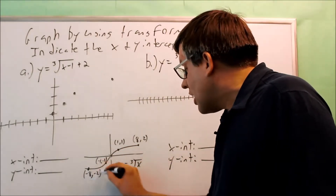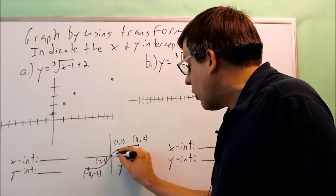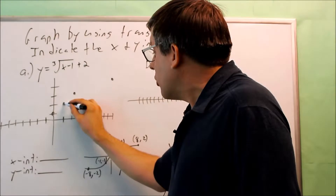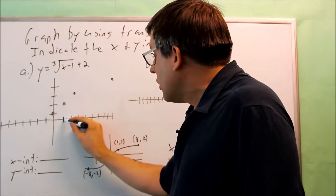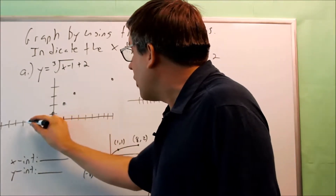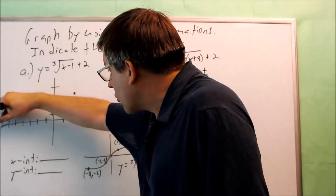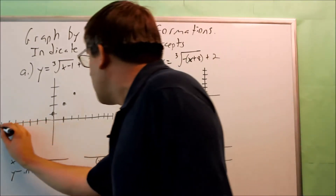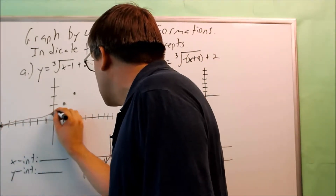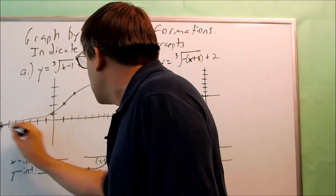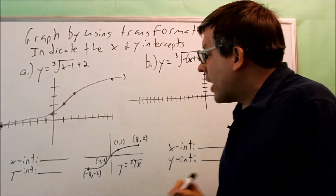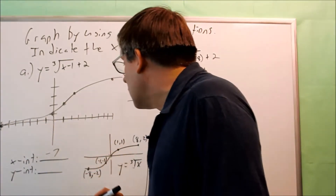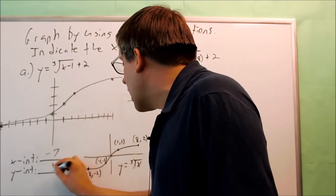If I want to go down to negative eight negative two, from the starting point I want to go down two and eight to the left. I'm going to go down two and eight this way — that means right there is my point, and that would be my x-intercept where I would cross. I connect all this, so the graph looks like that. My x-intercept, where it crosses, is going to be at negative seven. My y-intercept, it crosses at one.